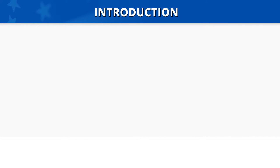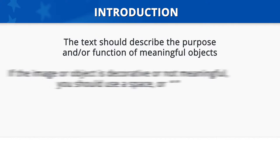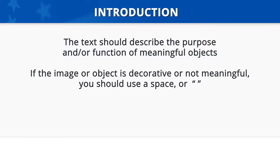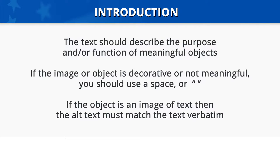When creating descriptive text, there are a couple of things you should keep in mind. The text should describe the purpose and/or function of meaningful objects. If the image or object is decorative or not meaningful, you should use a space or double quote space double quote as descriptive text. If the object is an image of text, then the alt text must match the text verbatim.